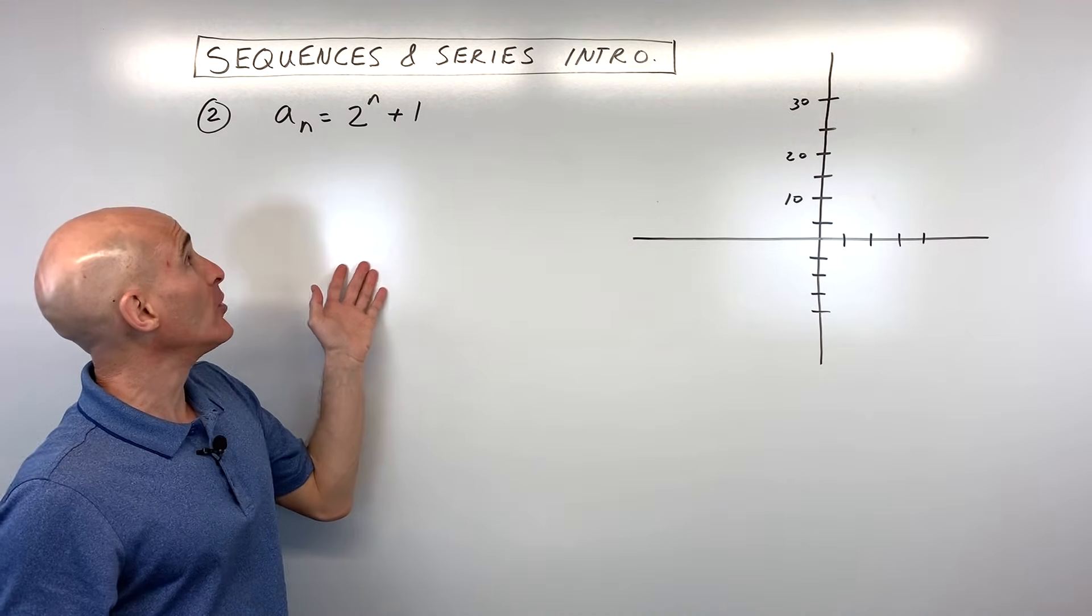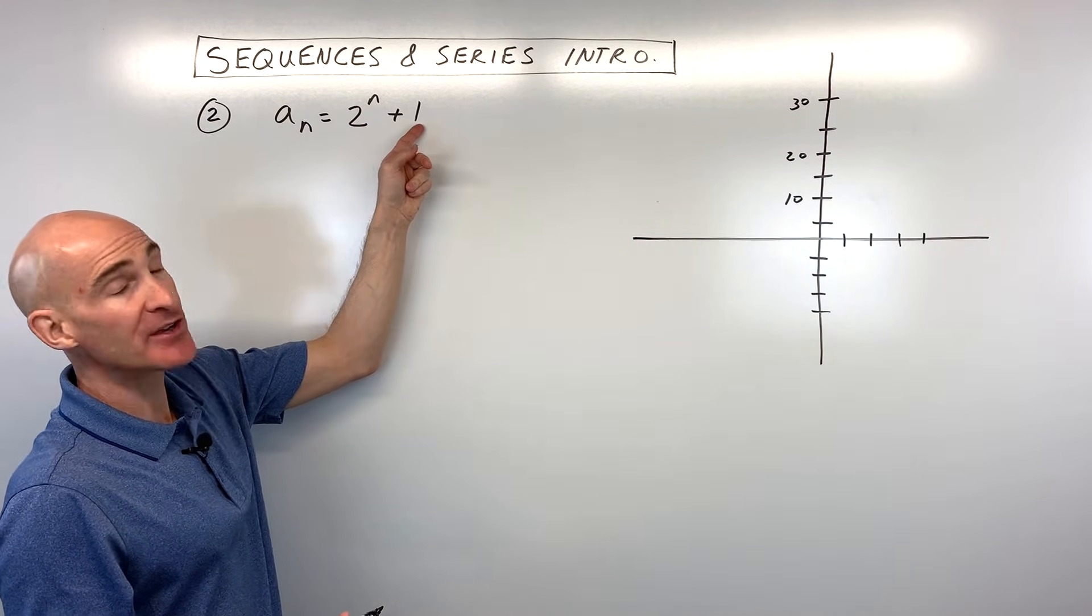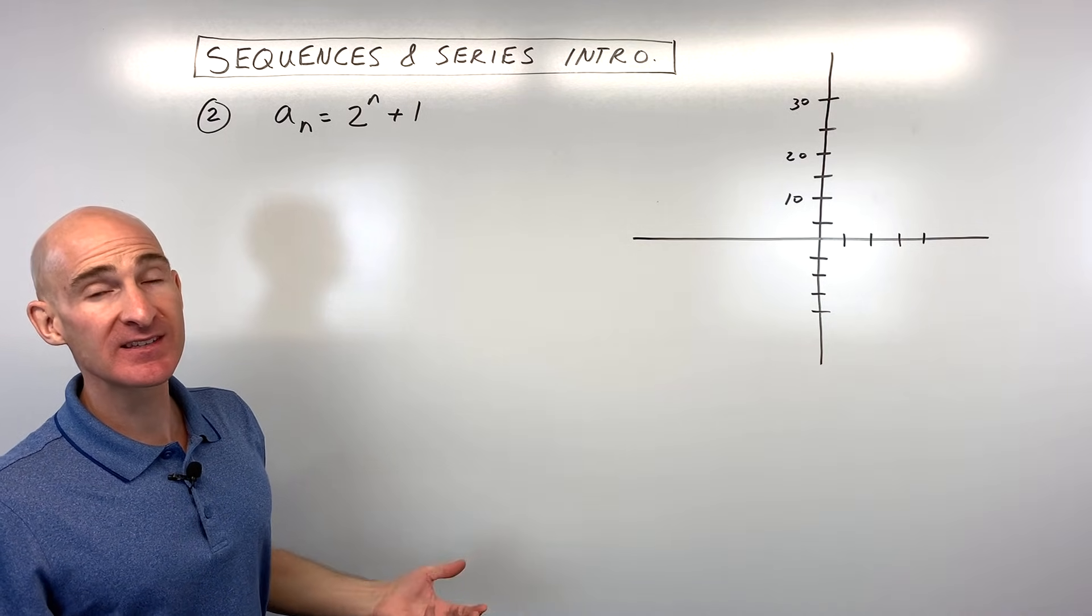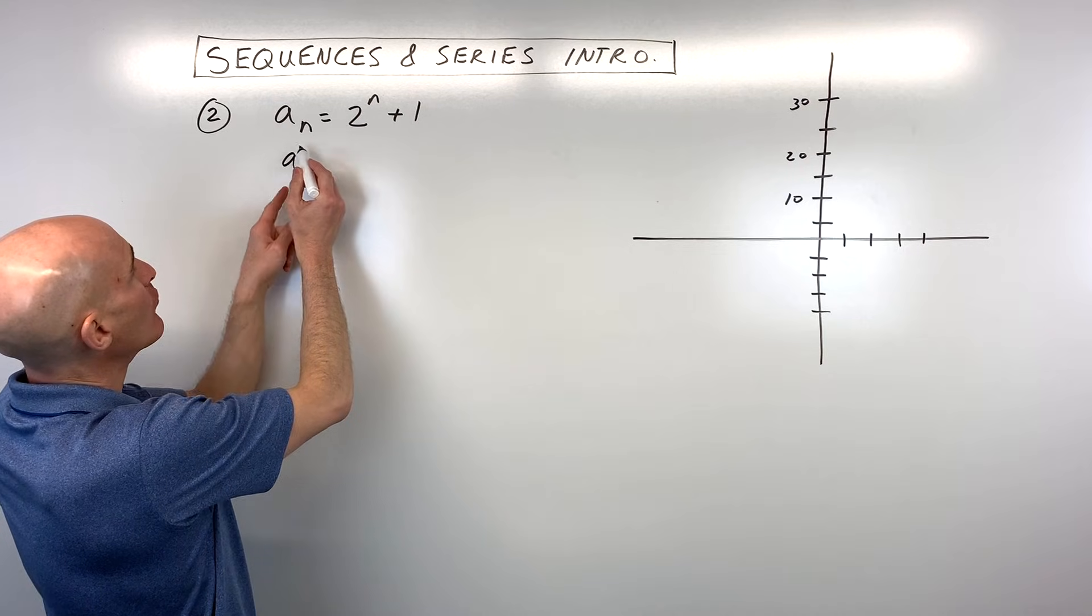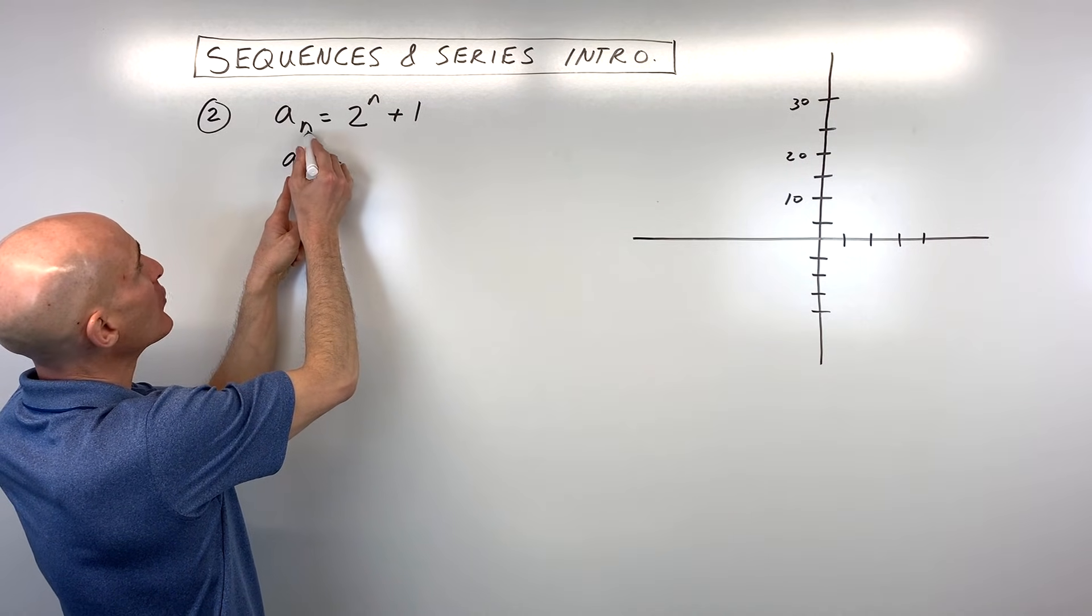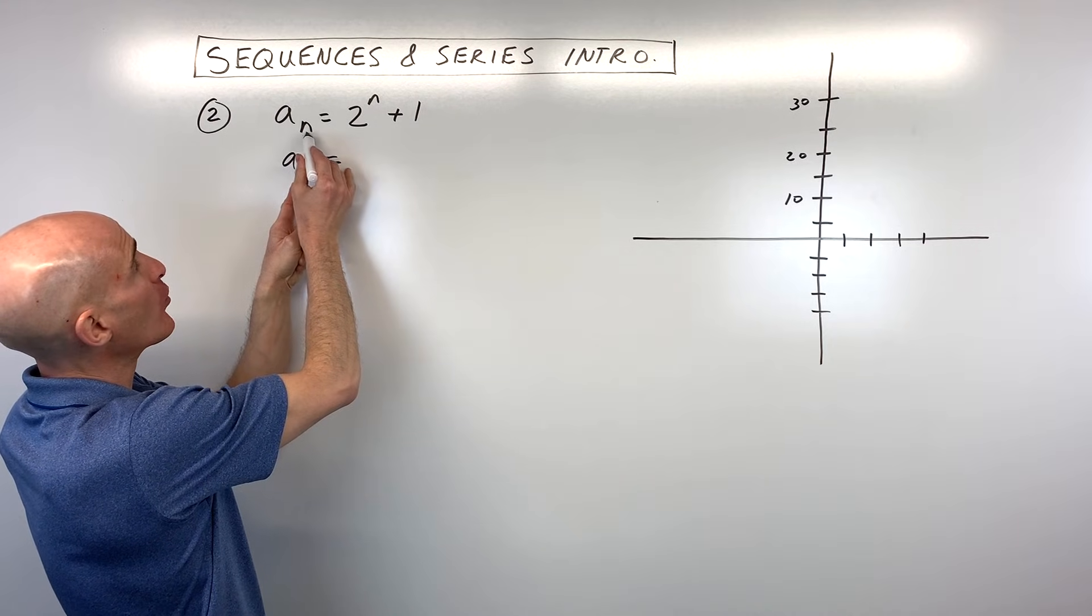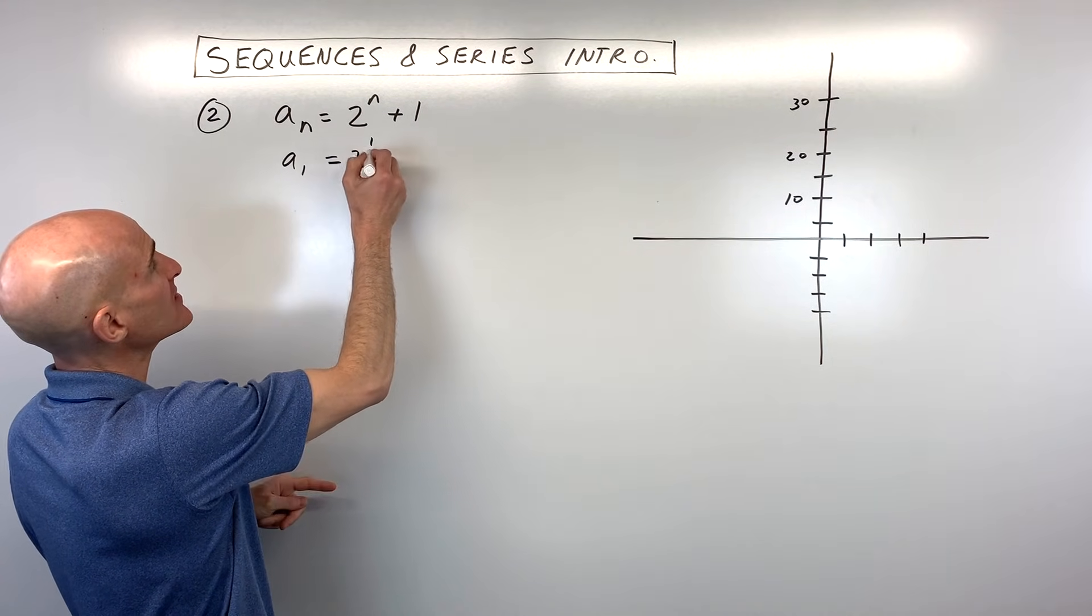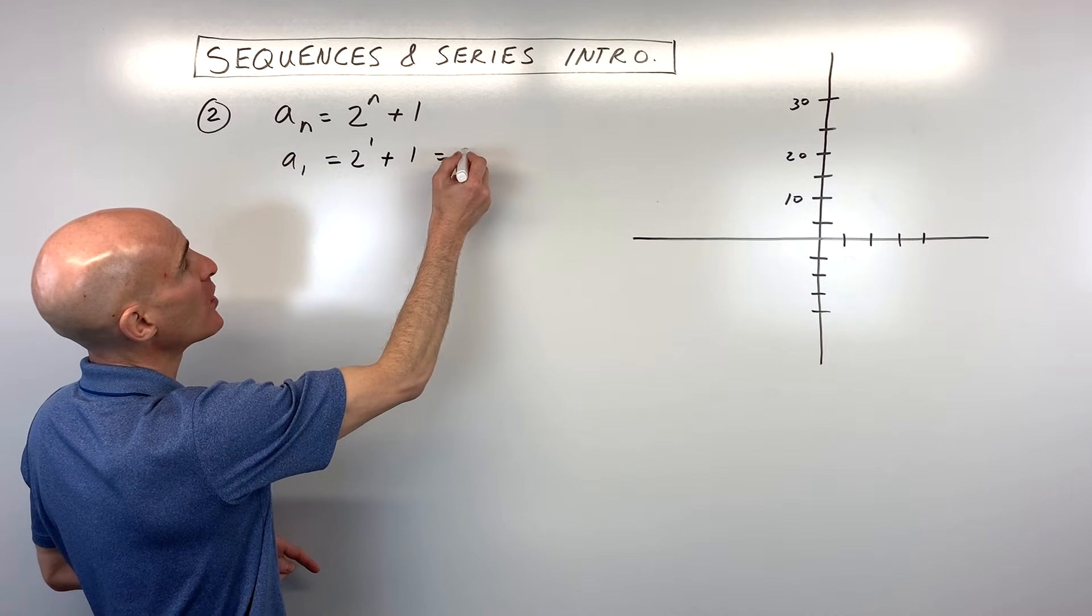Let's look at another example. So this one here, we've got a sub n equals 2 to the nth power plus 1. How do we find the first five terms in this sequence? Well, we're going to follow that same pattern we did in the last problem. We take a sub 1, remember n equals 1. That just tells us that this is the value of the first term. But wherever we see n, we're going to put 1. So that's going to be 2 to the first power plus 1. Of course, 2 to the first is 2 plus 1 equals 3.